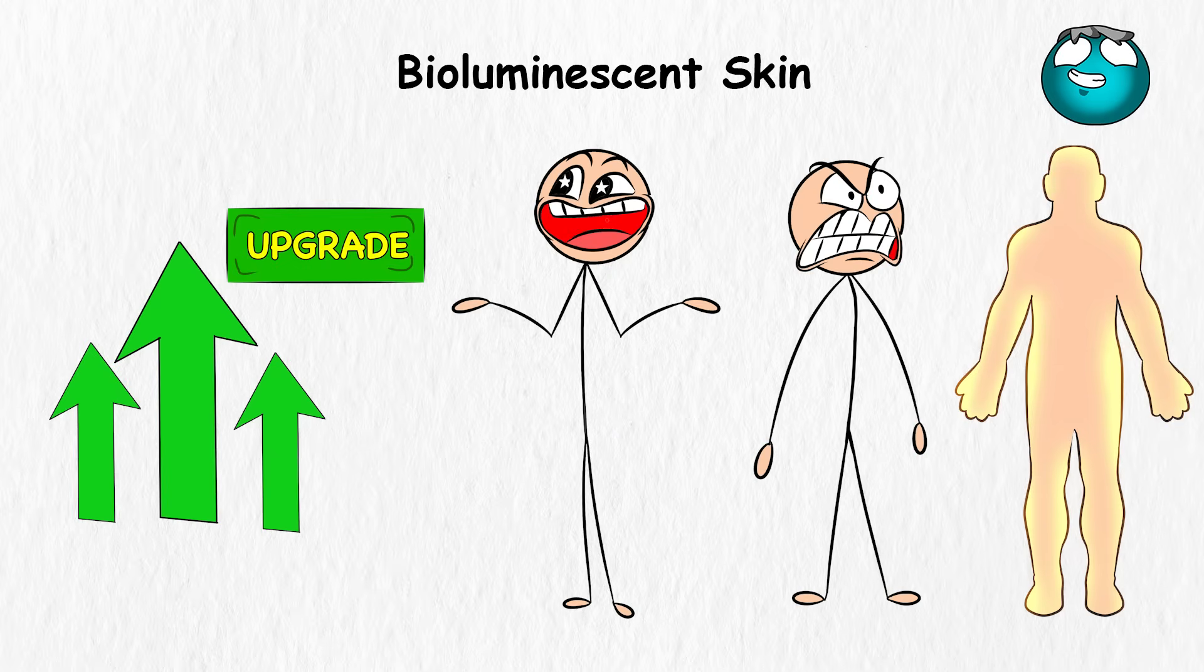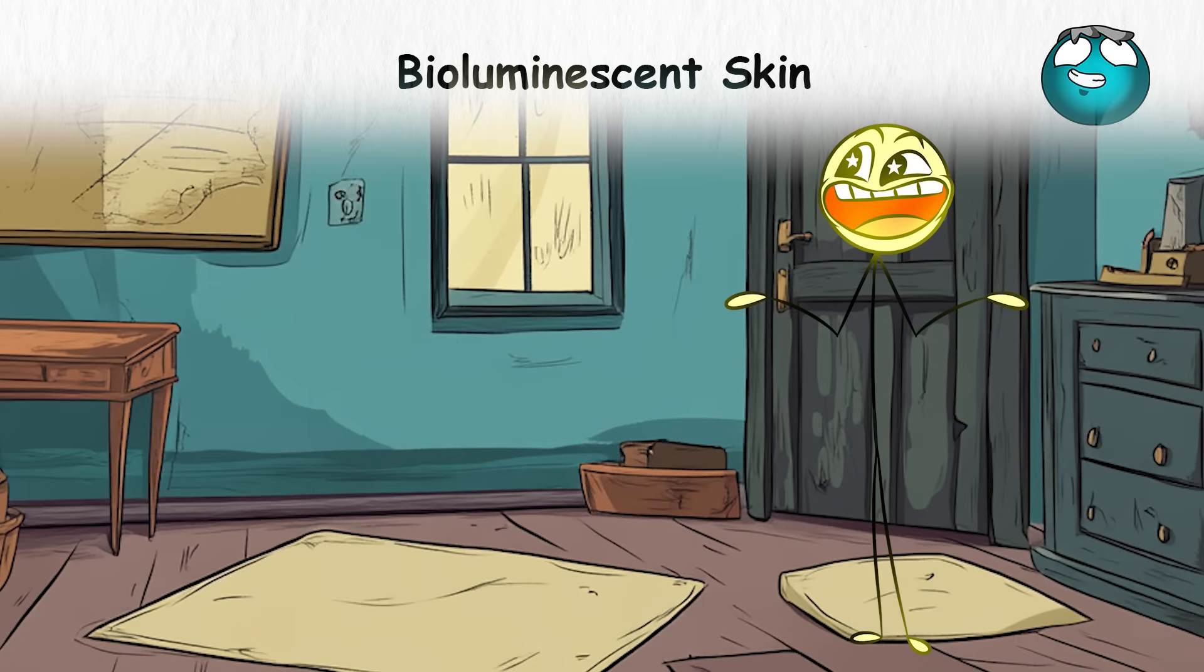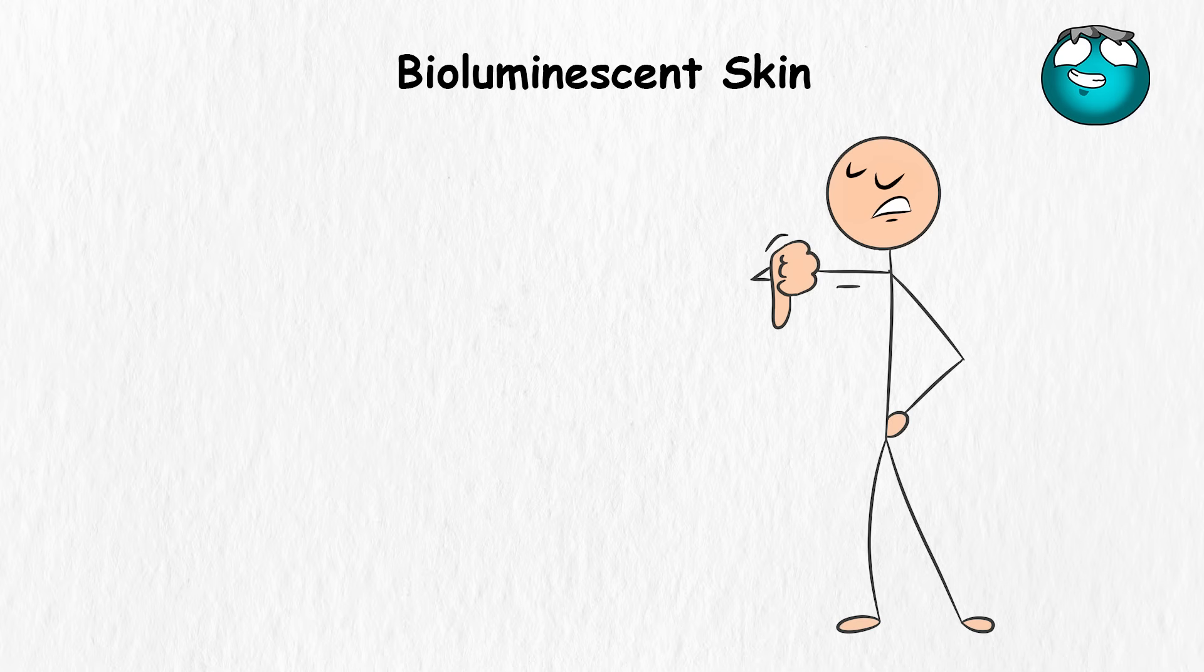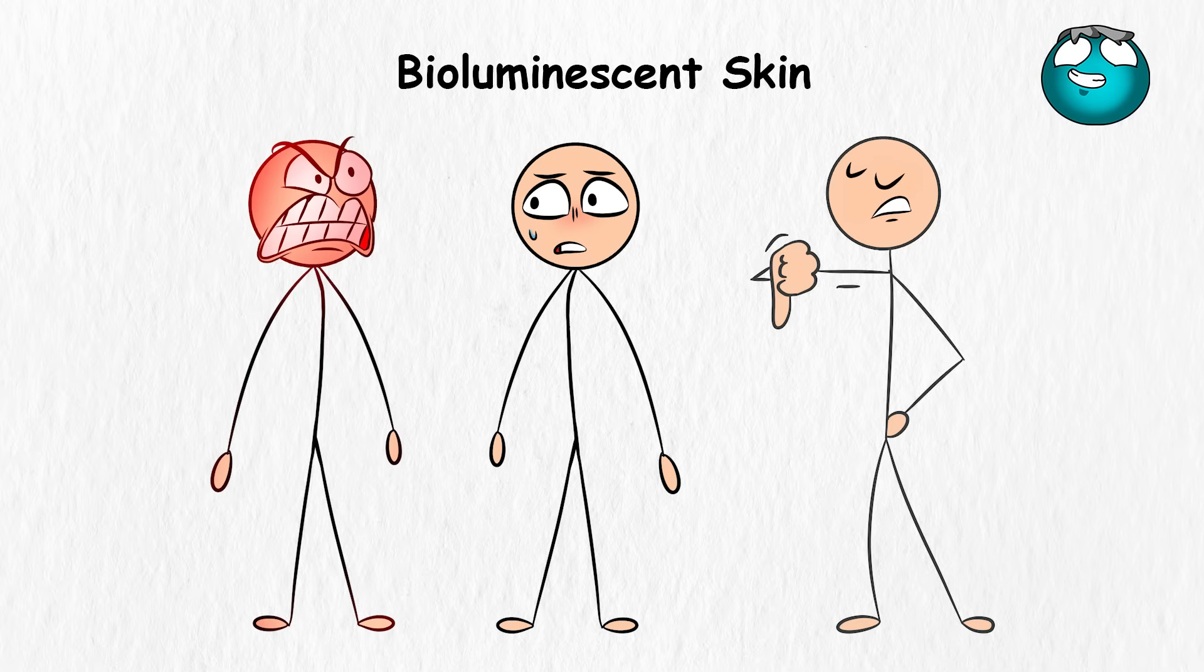You could also convey your emotions and intentions easily with glowing patterns. When happy, you'll shine warm yellow, and when angry, it'll be a flash of bright red. It's like having mood rings, but built into your skin, and no one can ghost you when your argument is literally glowing in their face.